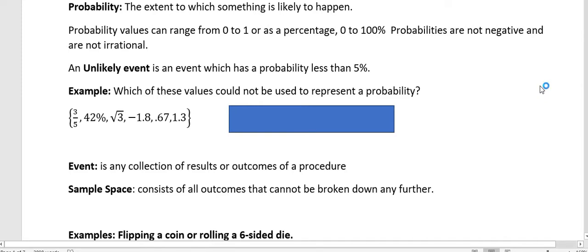Probability is the extent to which something is likely to happen. Probability values can range from zero to one or as a percentage, zero to a hundred percent. Probabilities are not negative and they're not irrational numbers.